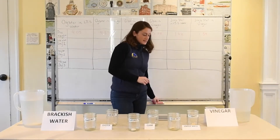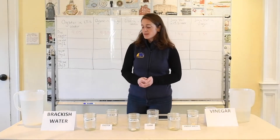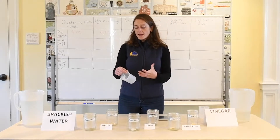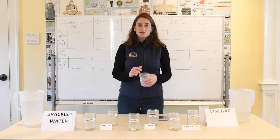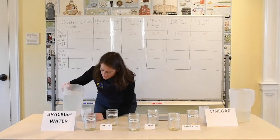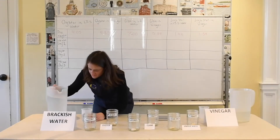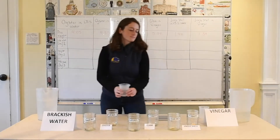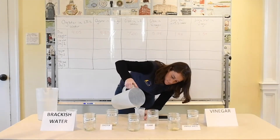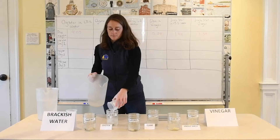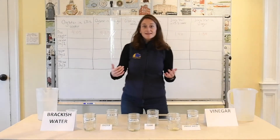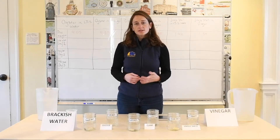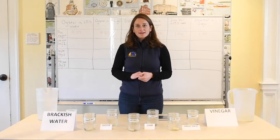Now that I have each of my shells weighed and my weight recorded, I'm ready to set up the experiment. I'm going to use two different beakers — one specifically for the vinegar and the other for the brackish water — and weigh out 200 milliliters of each solution and pour it in on top of the shells. And now my experiment is all set up and ready to go. I'm going to be leaving this for three days, checking in each day to re-weigh the shells and see how they've changed, and then we'll talk about it all at the end of day three.